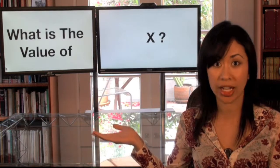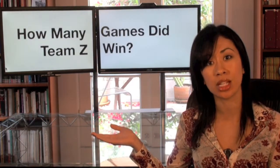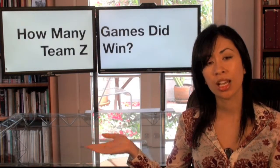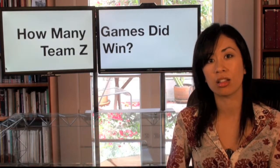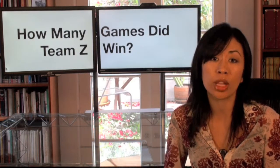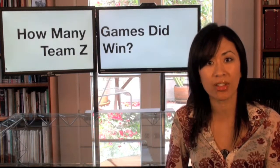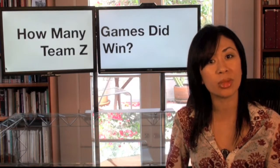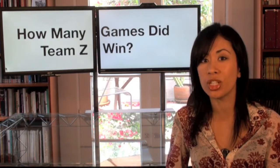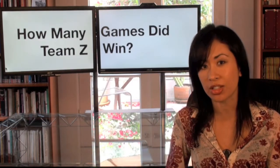These questions might look like: what is the value of x? Or, how many games did Team Z win? A sufficient answer would be something like, Team Z won three games. That is just one value — you're done. That means the information given was sufficient to find just one value for an answer.